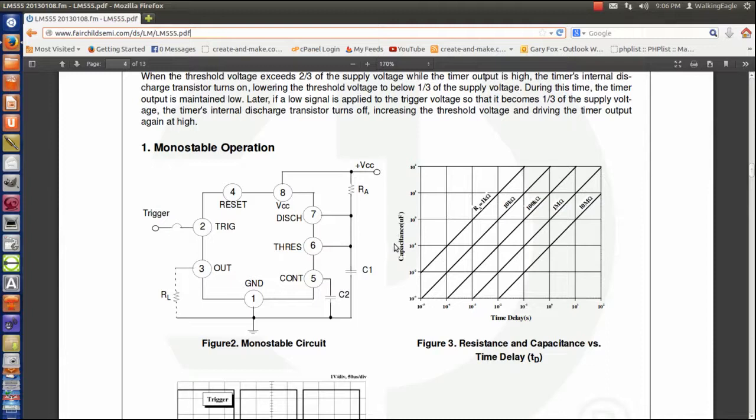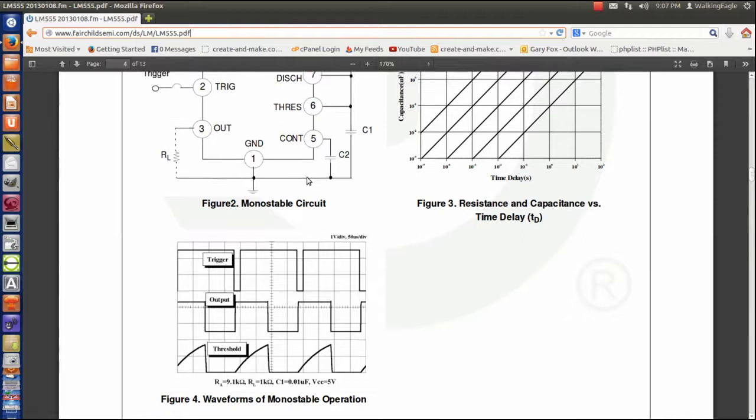If you remember right, time constant is resistance in ohms times capacitance in farads. So microfarads and megaohms cancel out, so it is capacitance in microfarads times resistance in megaohms, and that is the time constant. Time constant is the amount of time it takes to reach approximately 63% of the voltage, and that would be 63% of VCC. Remember this thing, the threshold is at two-thirds, which would be 67%. So a time constant is a rough estimate for how long it is going to take for this thing to charge for the monostable operation. Remember I said rough estimate, we can get better than that.